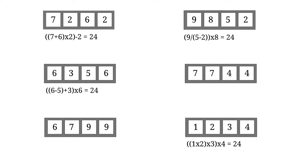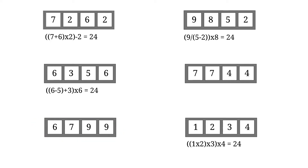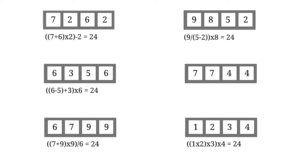So let's go over the easier one of the last 2. That one is 6, 7, 9, 9. What you can do is add 7 to 9 to get 16, multiply 16 by 9 to get 144, and then 144 divided by 6 magically becomes 24.